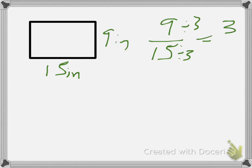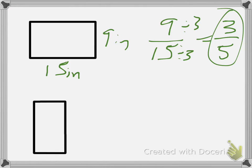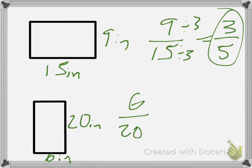My second shape that I'm going to draw, let's say that it is 20 inches on this side and 6 inches on the bottom side. So again I would have a ratio of 6 to 20 or 6 over 20. I can divide both of those numbers by 2 and I end up with 3 over 10.